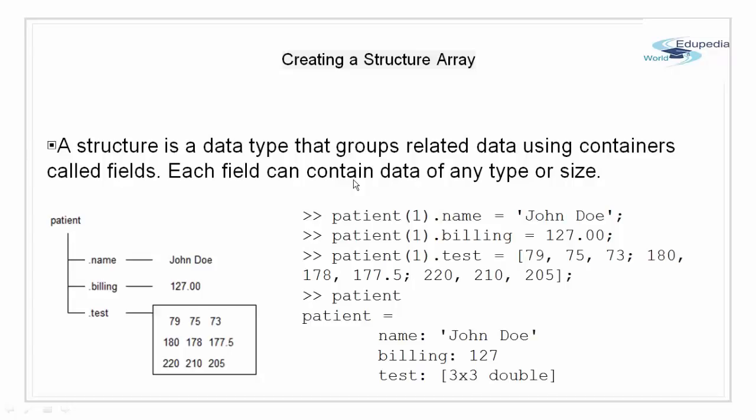A structure is a data type that groups related data using containers called fields. Each field can contain data of any type or any size. For example, we can store a patient's record in a scalar structure with fields. We can have the name of the patient, billing amount and the test results for the patient.